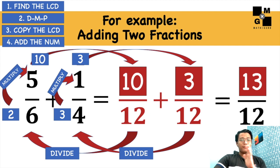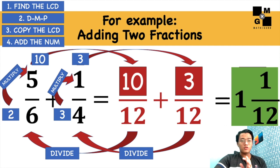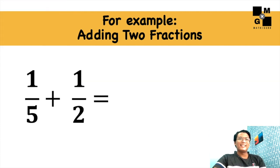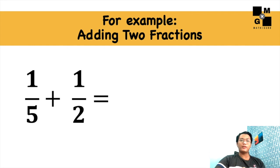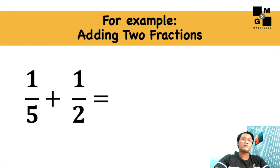13 over 12 is an improper fraction, so we can convert it into a mixed number. You may watch the video tutorial about converting on my other videos, but the answer is 1 and 1 over 12. Next, what if we have 1 fifth and 1 half? Can you try to solve this? While you're doing it on your paper, I will help you how to solve this one.